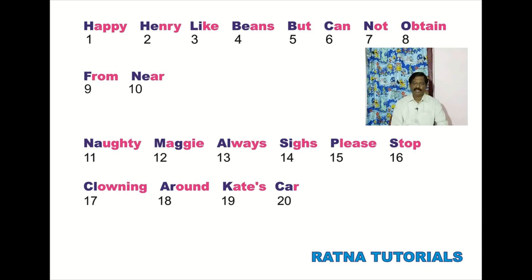And the second acronym: Naughty Maggie always sighs. Please stop clowning around Kate's car. Naughty — the first two letters NA denotes sodium, and the symbol is NA. That is actually the Latin name natrium. And then Maggie — MG denotes magnesium.